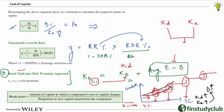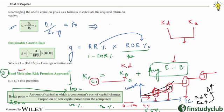For example: suppose the cost of debt changes at $100 million of debt, and debt represents 40% of the capital structure. The break point in terms of total capital occurs at $250 million — because at total capital of $250 million, 40% of that is $100 million of debt, which is exactly where the cost of debt changes from 4% to 5%. So break points are values of total capital, but the reason for those break points are the individual source cost slabs.